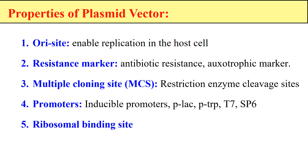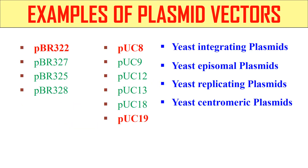These plasmid vectors may also contain a ribosomal binding site, which is also the case of expression plasmids or expression vectors. So we can also add the ribosomal binding site. These are the properties of a plasmid vector. Now let us discuss examples of plasmid vectors. There are several series: first is pBR322, another series is the pUC series, and beside these, yeast plasmids are also there.